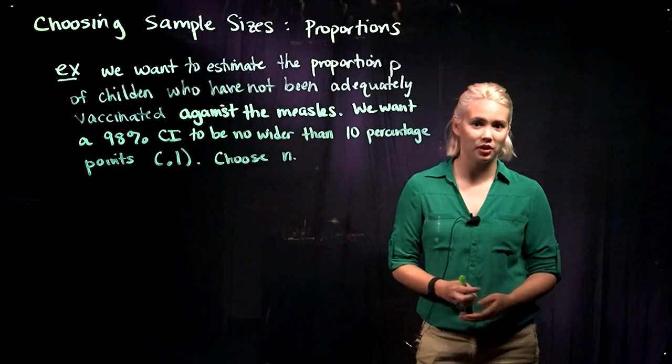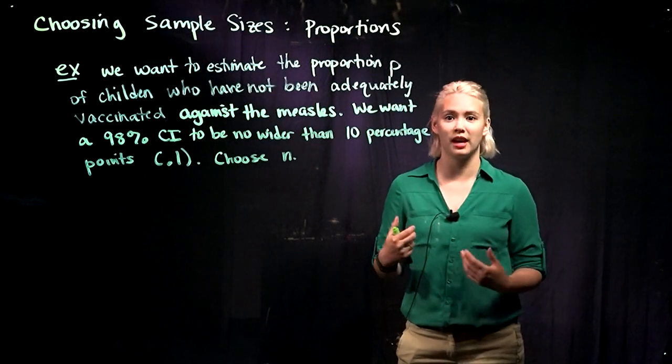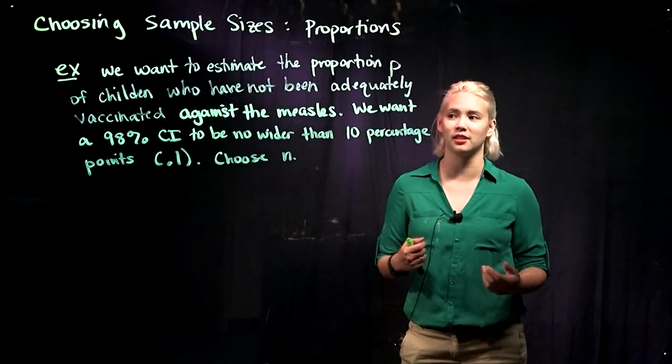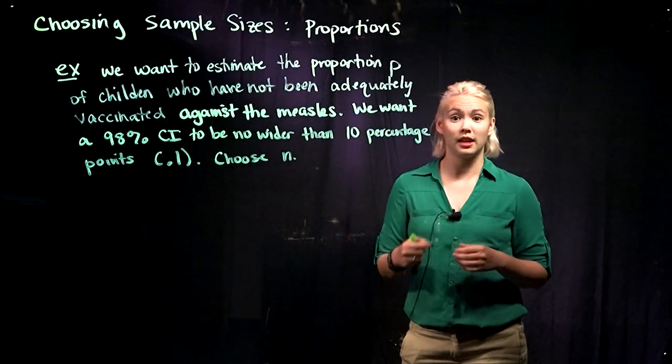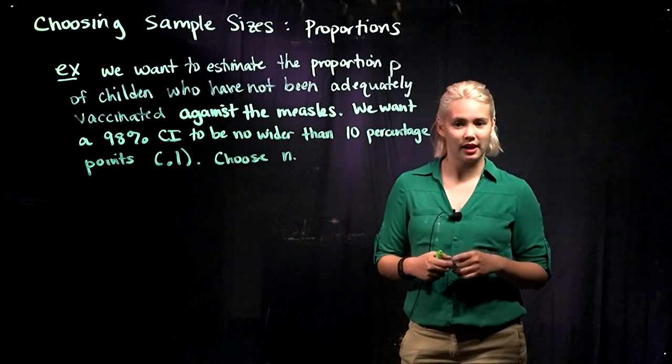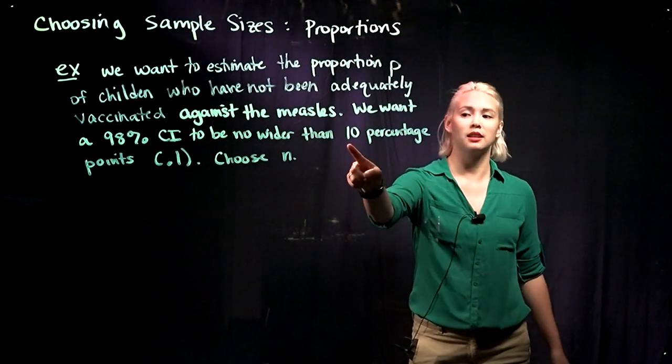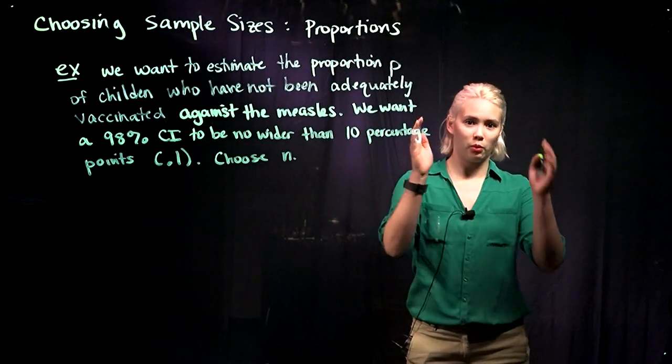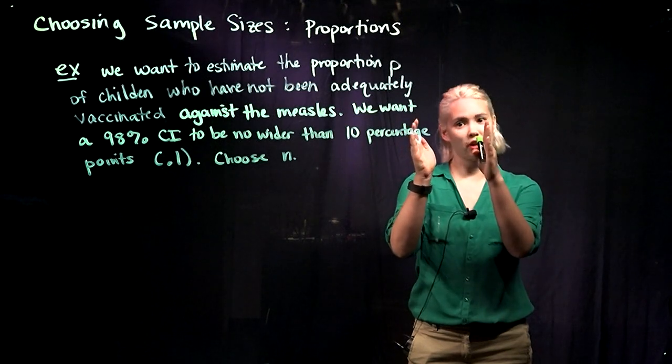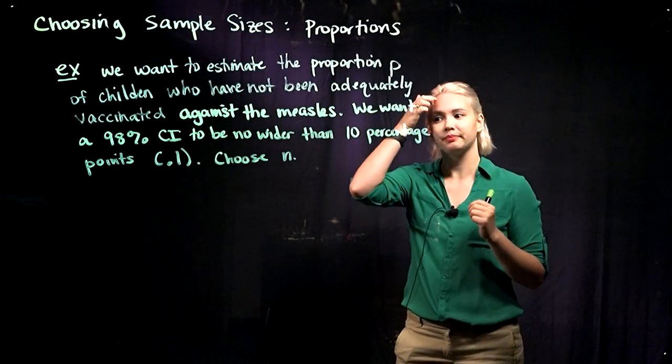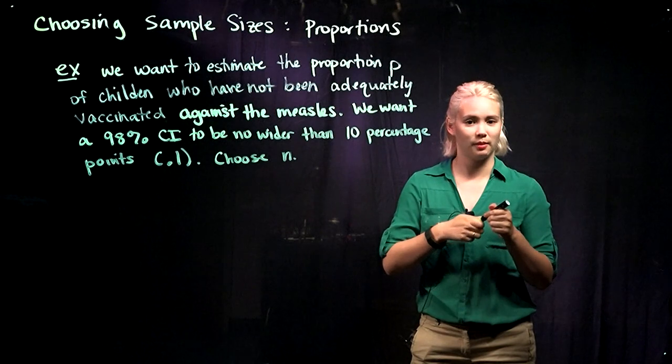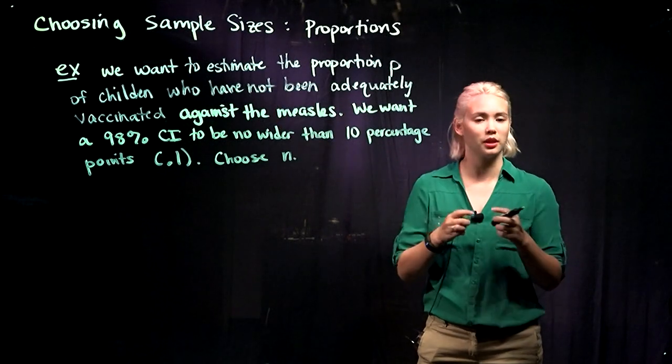In this example, we want to estimate the proportion P of children who have not been adequately vaccinated against the measles. We want to have a 98% level of confidence, and we want that confidence interval to be no wider than 10 percentage points. So 10 is 2D. That means in one direction it will be 5 percentage points. So we want to choose our sample size so that we can meet this goal.